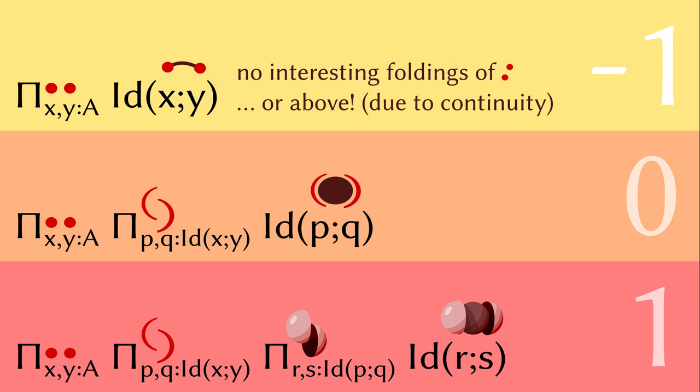Therefore, there is no interesting homotopy above minus one, which by definition means the type is at level minus one. For the next level, the circle is ranging over two points and then two arcs. Remember that the two points plus the two arcs make the circle.